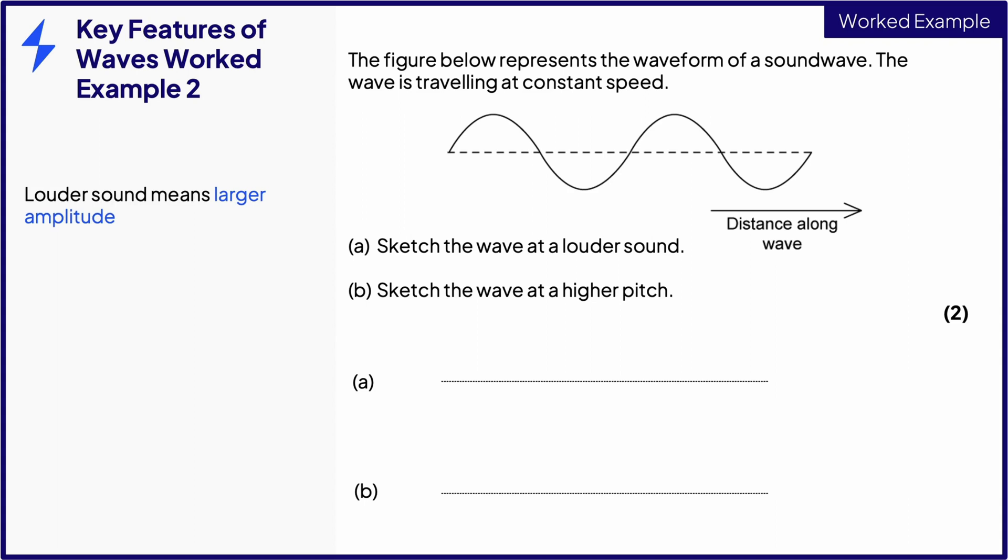For A, a louder sound means the wave would have a larger amplitude. This means the peaks and drops will be larger, like this. This is the only change. We need to make sure we only draw the same number of waves, in this case two cycles, for one mark.